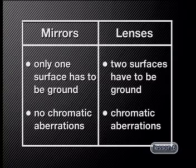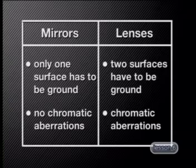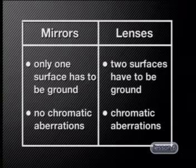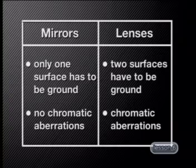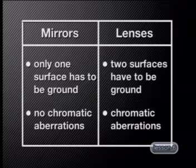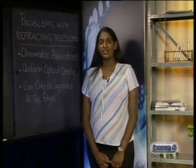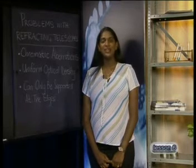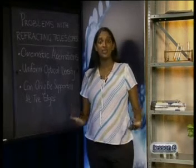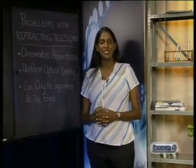Using mirrors instead of lenses addresses these problems. In the first place, mirrors have only one surface that has to be ground into the correct shape. And because mirrors reflect light, there is no change in wave speed and therefore no chance of chromatic aberrations. Also, a mirror can be supported along its full back surface, which means you can have much larger mirrors as objective optical elements.